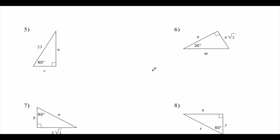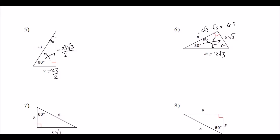Problem 5: given the hypotenuse (across 90°), the shortest length is half of it: 23/2. Across 60° is (23/2)√3. Problem 6: given across 30°, the hypotenuse is double, which is 12√3, and across 60° is 6√3 × √3 = 6 × 3 = 18.